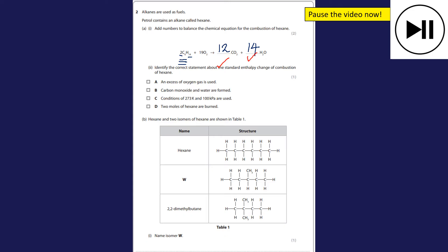Part two, identify the correct statement about the standard enthalpy change of combustion. An excess of oxygen gas is used, I agree with that, but I'm going to make sure the rest are wrong. It says carbon monoxide and water formed, no, complete combustion has to occur so it has to be carbon dioxide. Conditions are 273 kelvin and 100 kilopascals, well no, it's 298 kelvin is standard conditions. 100 kilopascals is correct but this one's wrong. Two moles of hexane burned, no it's not, by definition it's when one mole of a substance is reacted with oxygen or burnt in oxygen. So the answer is A, excess oxygen is used.